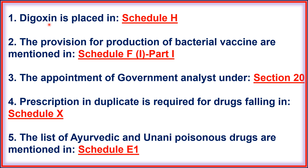1. Bisoxin is placed in Schedule H drug. 2. The provisions for production of bacterial vaccine are mentioned in Schedule F1, Part 1. 3. The appointment of government analyst is under Section 20. 4. Prescription in duplicate is required for drugs falling in Schedule X. 5. The list of Ayurvedic and unanimous poisonous drugs are mentioned in Schedule E1.